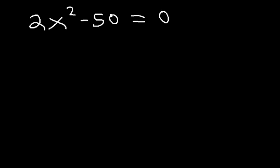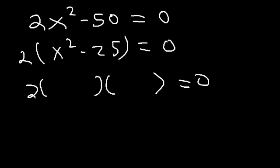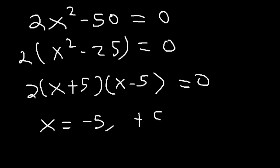What about 2x squared minus 50? Notice that 2 or 50 is not a perfect square. But we can take out the GCF, the greatest common factor, which is 2. If we factor out 2, we'll be left with x squared minus 25. 2x squared divided by 2 is x squared, and negative 50 divided by 2 is negative 25. Now we can use the difference of perfect squares technique to factor it. Therefore, the answer is x is equal to negative 5 and positive 5.